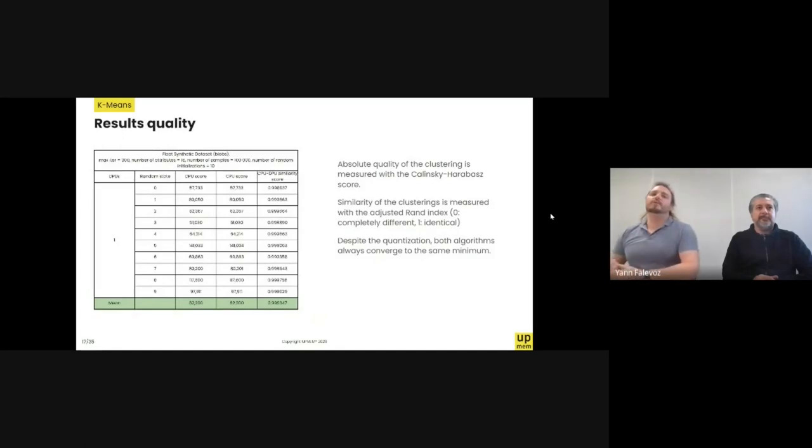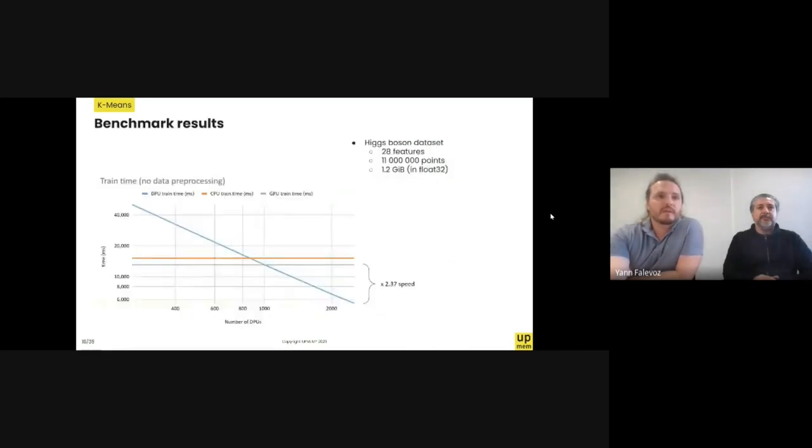So the first question to ask when you do that, of course, is do we modify the results? Is it the same algorithm? It's essentially something there's no analytical answer for. You have to test it. Simply by taking a bunch of random data, random initialization, running the same algorithm on DPU and CPU. And every time, you can associate a score which represents the quality of the clustering to both algorithms. And you can also compute the similarity between the CPU and DPU results. But what we can see here is that, of course, because of the quantization, we've got rounding errors. But the important part is that the DPU algorithm doesn't fall into a different local minimum than the CPU one. So that's pretty good news.